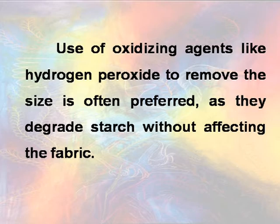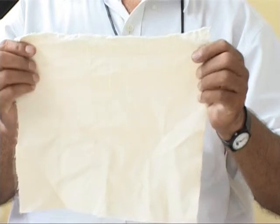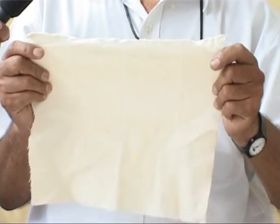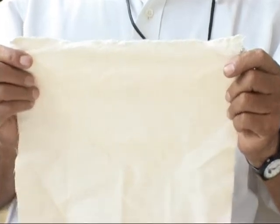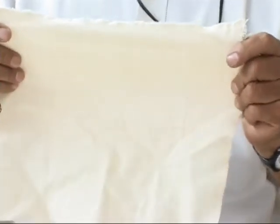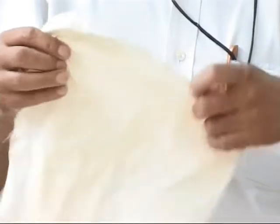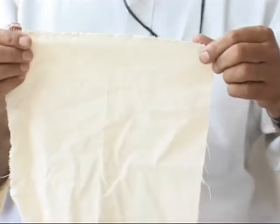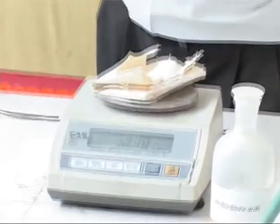First of all, the grey cloth obtained after weaving has many impurities. This sample is 25 by 25 inches, weight is 12.15 grams, and the unfolded cloth is dropped into a hydrochloric acid solution.